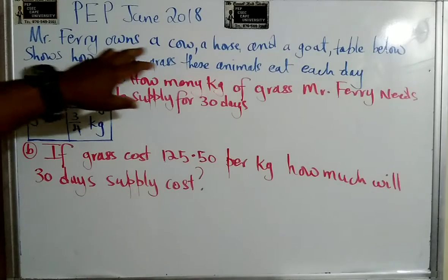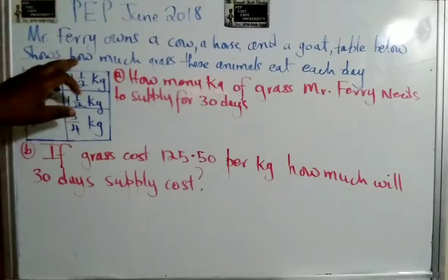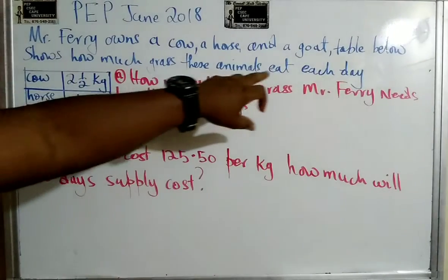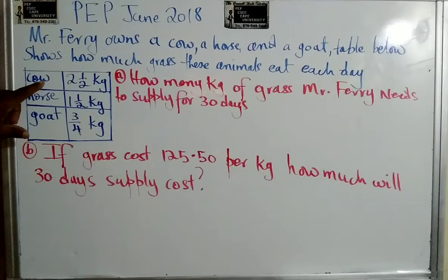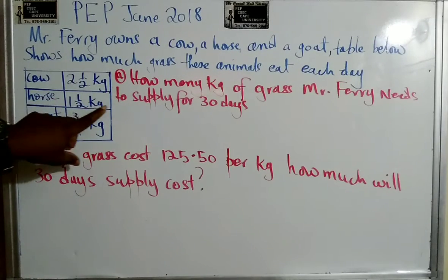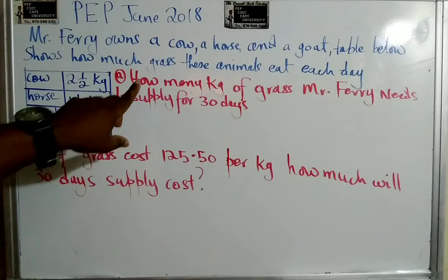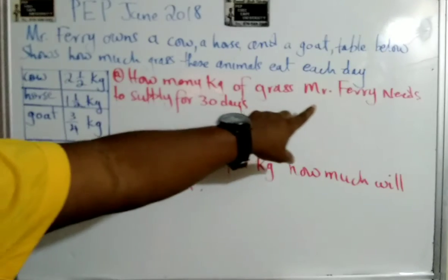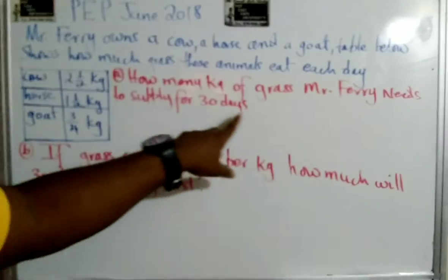So Mr. Ferry owns a cow, a horse, and a goat. And the table below shows how much grass these animals eat each day. A cow eats one and a half kilograms of grass, a horse one and a half kilograms per day, and a goat three quarters per day. And they ask us how many kilograms of grass Mr. Ferry needs to supply for 30 days.